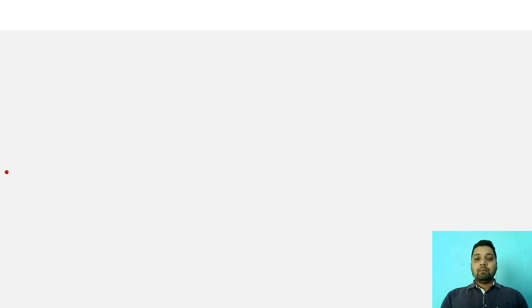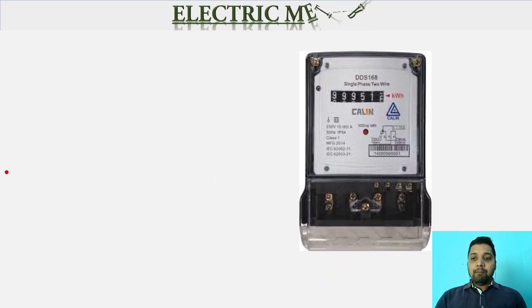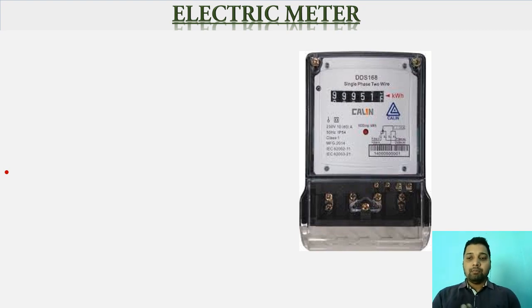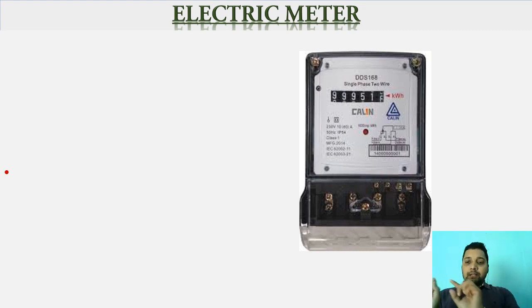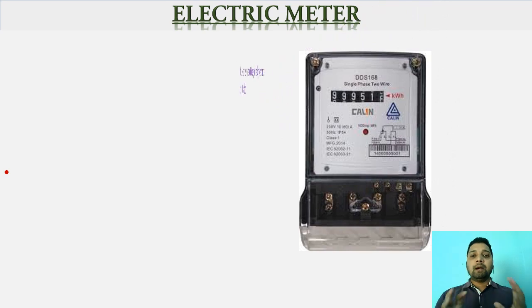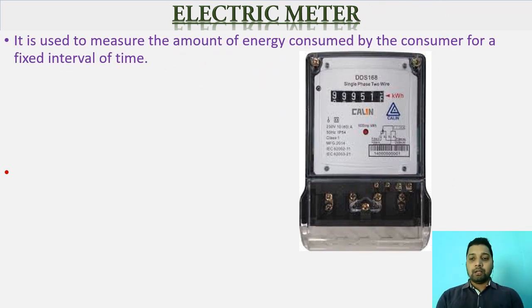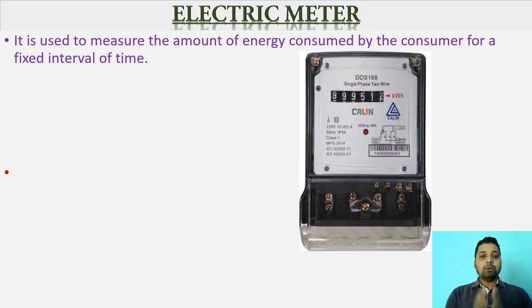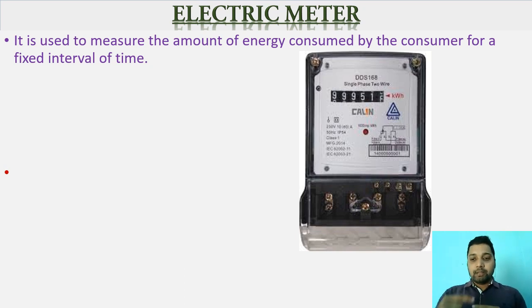So in our home, whenever we get the supply of current, the amount of energy we have used during a period of time can be measured by an electric meter. This electric meter is used to calculate the electric bill that we pay at the end of one month or sometimes quarterly (three months). The units on this bill are measured in kilowatt-hours, and each unit has a certain cost.